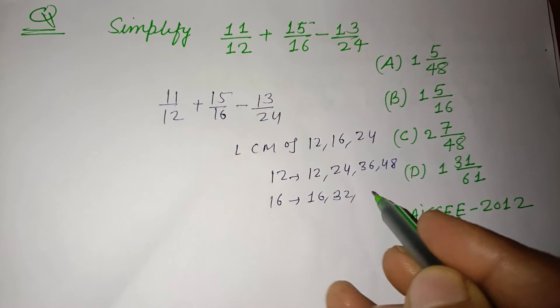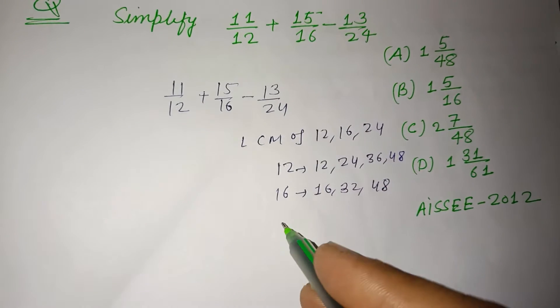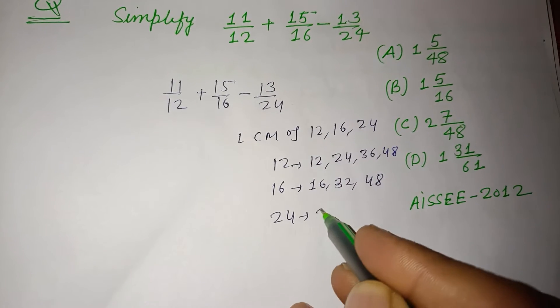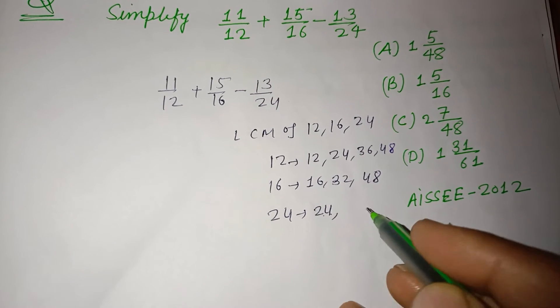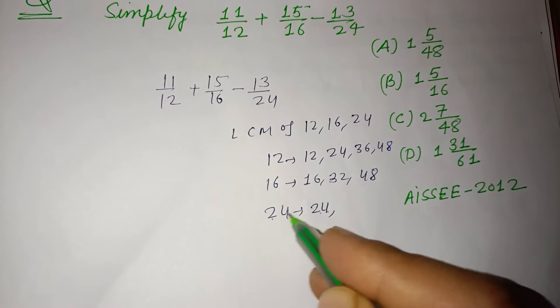16 times 2 is 32, 16 times 3 is 48. Multiples of 24 are 24 and 48.